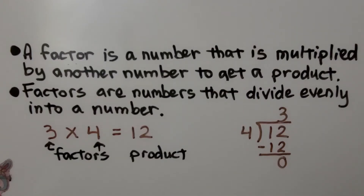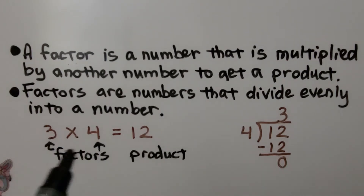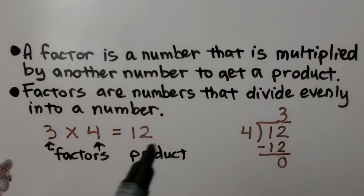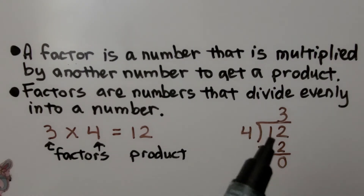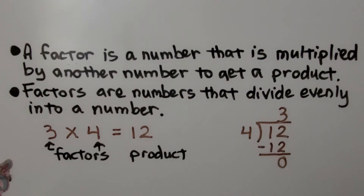A factor is a number that is multiplied by another number to get a product. Factors are numbers that divide evenly into a number. So 3 and 4 are factors of 12 — 12 is the product — and 4 fits evenly into 12 three times, with no remainder.